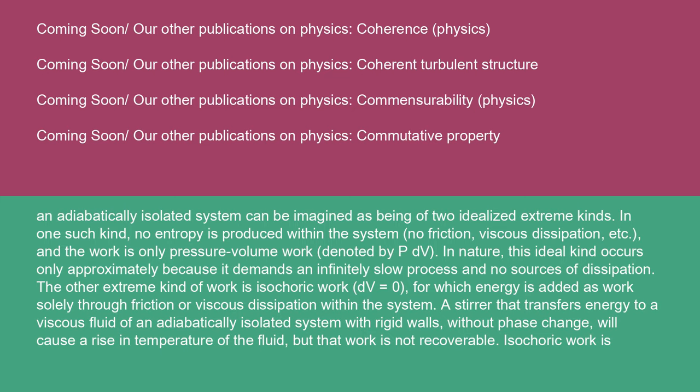An adiabatically isolated system can be imagined as being of two idealized extreme kinds. In one such kind, no entropy is produced within the system — no friction, viscous dissipation, etc. — and the work is only pressure-volume work denoted by PdV. In nature, this ideal kind occurs only approximately because it demands an infinitely slow process and no sources of dissipation. The other extreme kind of work is isochoric work (dV = 0), for which energy is added as work solely through friction or viscous dissipation within the system.